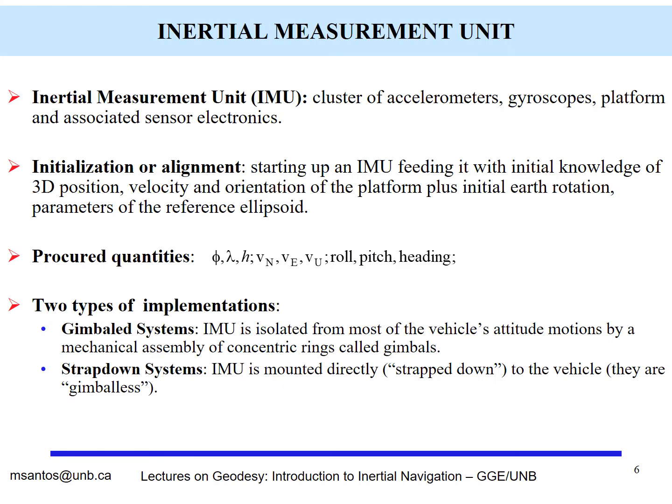An inertial measurement unit is a cluster of accelerometers, gyroscopes, a platform, and associated sensor electronics. There is a need for initialization or alignment, in the sense that the initial position, velocity, and orientation of the platform are required. The quantities we are measuring are position, velocity, and orientation.